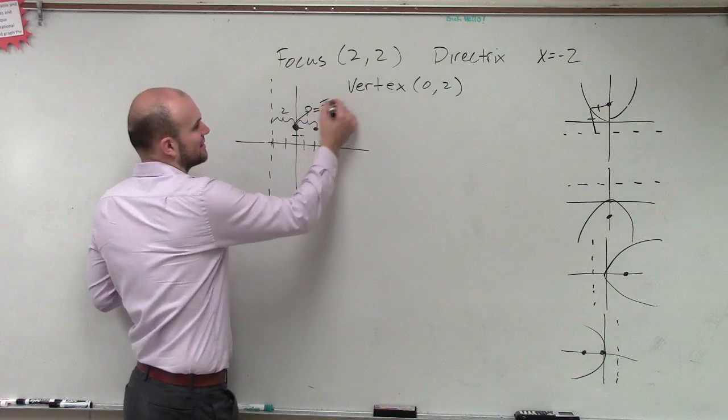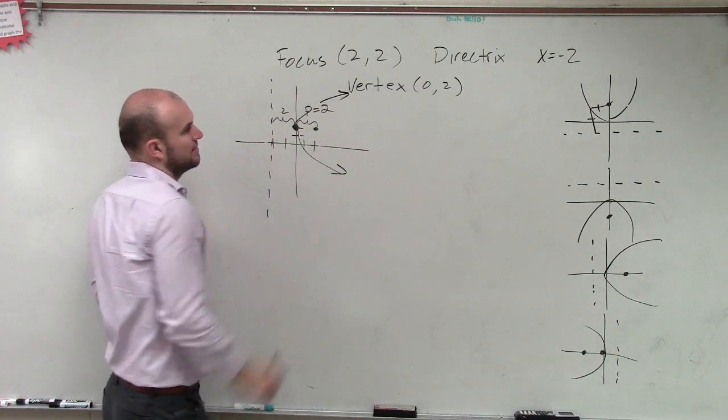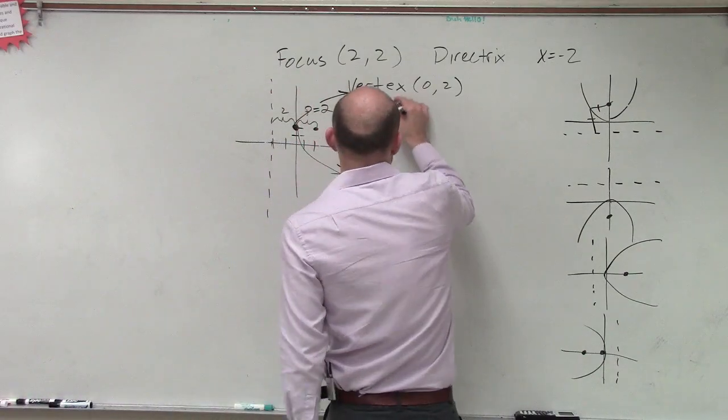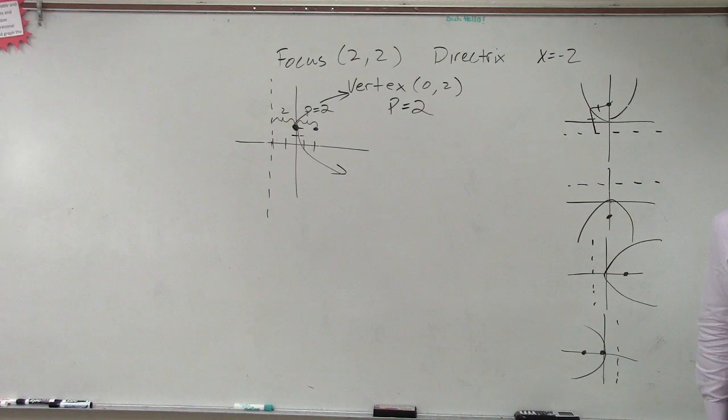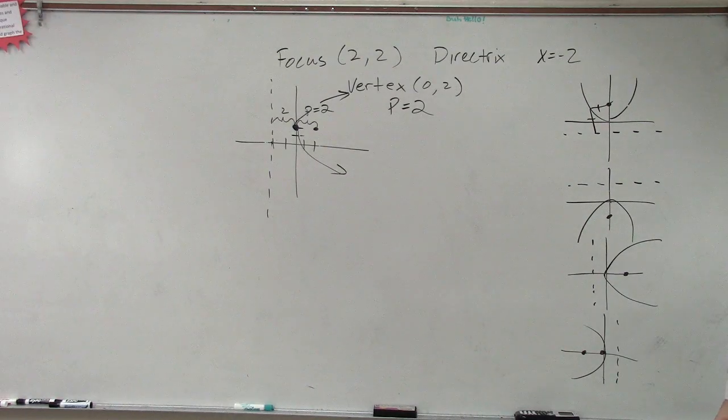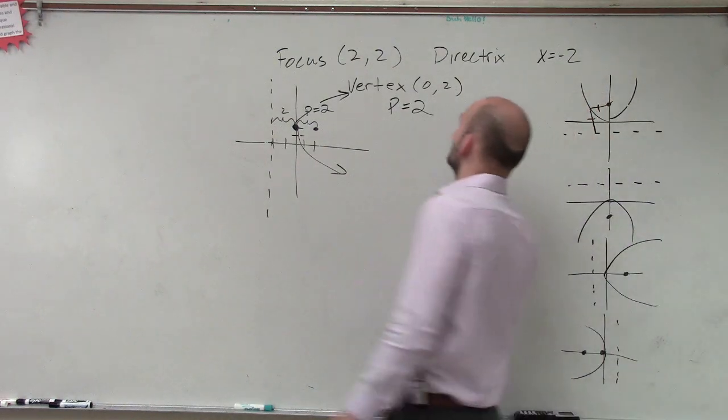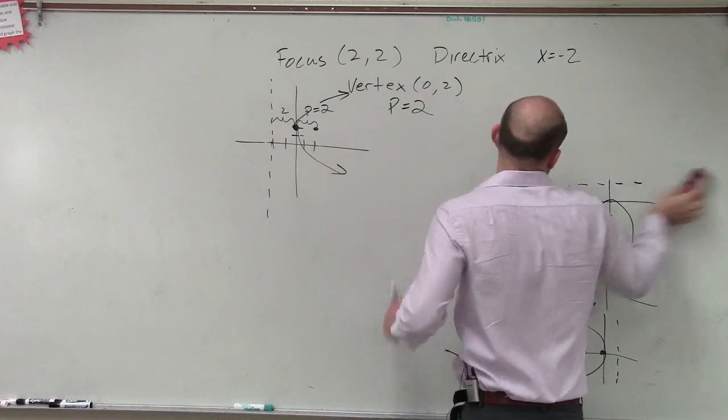Alright? So my graph is going to look something like this. We know that. Now, I know what the vertex is, and I know my P value is equal to two. Is that enough information now for me to write an equation? Yes. Absolutely.